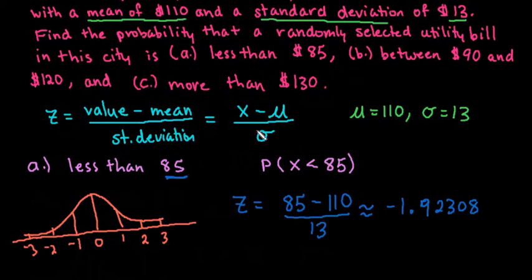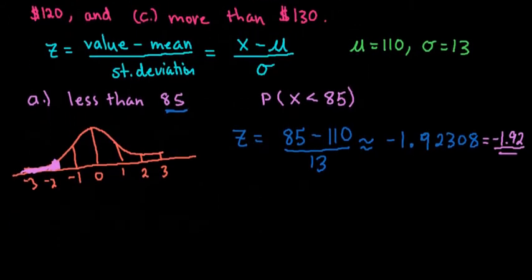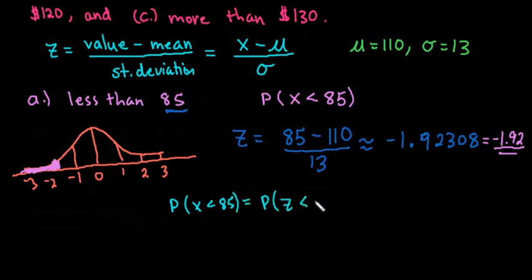When we use a table to look for this, we always round to two decimal places, so we would look for negative 1.92 on our table. The probability that x is less than 85 is equal to the probability that our z-score is less than negative 1.92. We can see from the shading that it's not going to be very much, because it's almost two standard deviations below the mean.